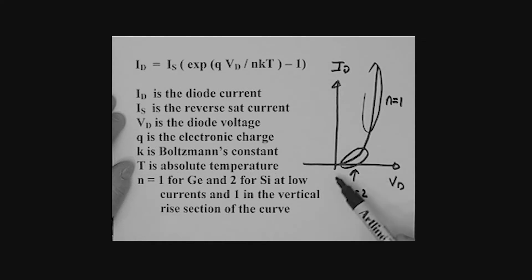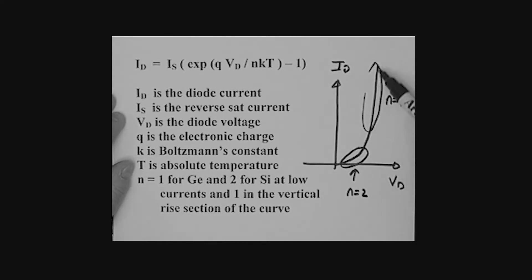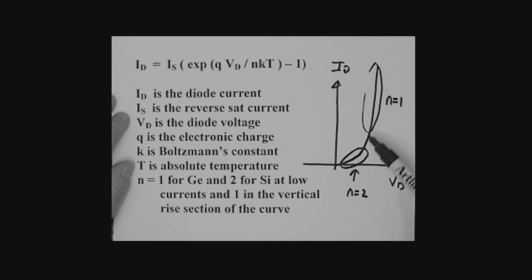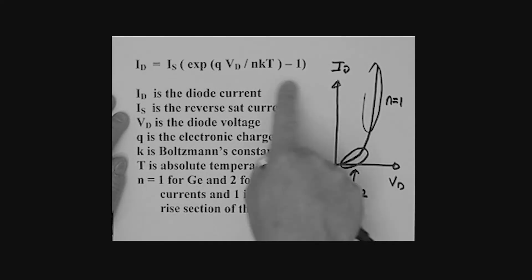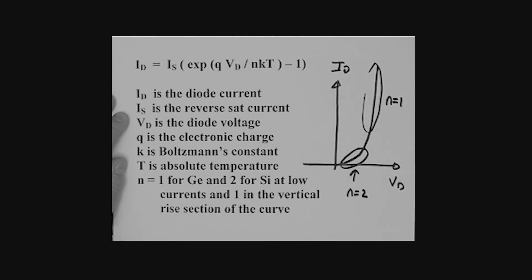This curve is actually shown in your textbook. I believe this is on page 65 of the text. You can have a look at that curve in the book. We can simplify this equation. We can put in the value of Q, K, and T at room temperature, and come up with a simplified version of that equation.